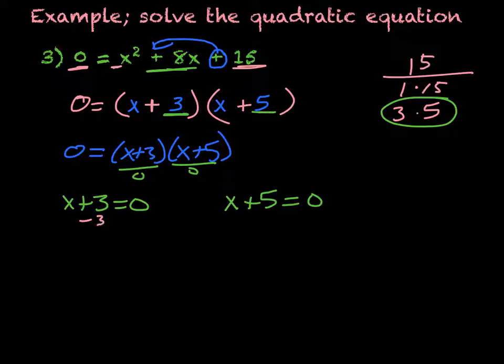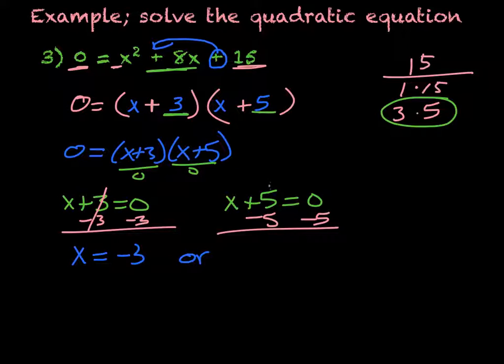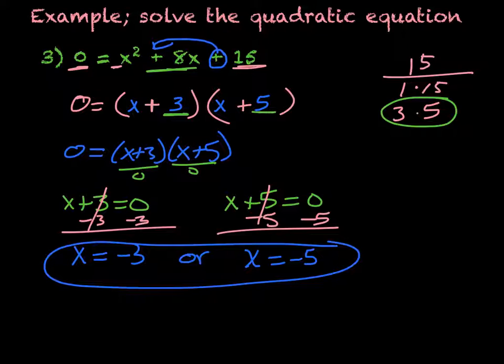So I'm subtracting 3 from both sides, leaving me with x = -3. Or I subtract 5 from both sides, leaving me with x = -5. So those are your two possible answers.